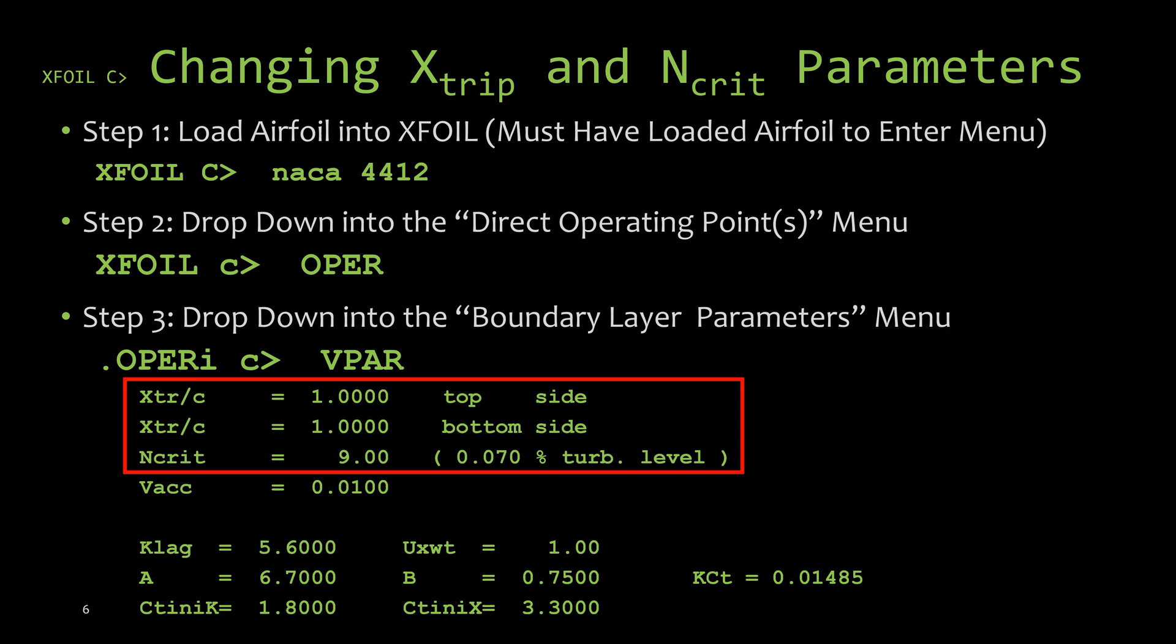In this video we're only going to look at changing the top three. That is the trip location on the upper surface, the trip location on the bottom surface, and the critical n value. In the video that we do the deep dive into the e to the n method that XFOIL uses, we'll look at some of the other values that are in this menu.